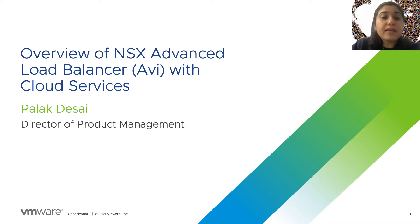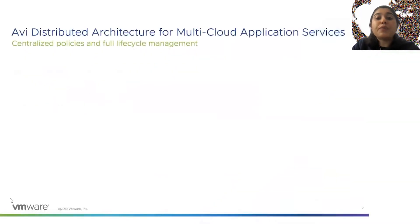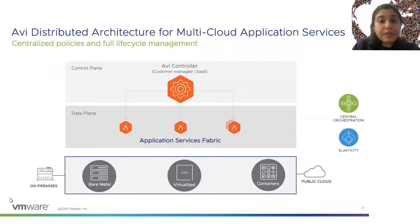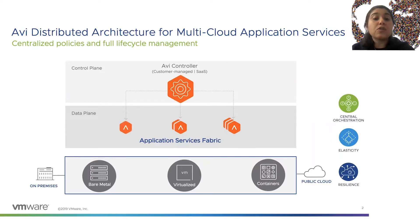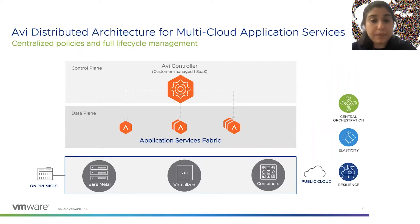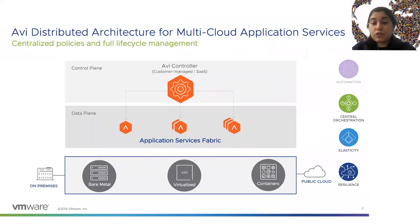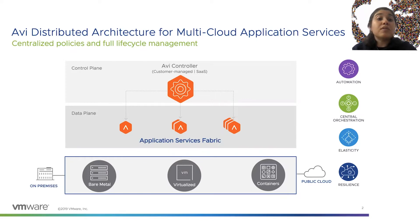Before we delve into the cloud services, I want to provide a quick overview of the AVI architecture. The AVI architecture is based on software-defined principles — it has a notion of a controller and a notion of the data plane. The controller provides intelligence and automation to the data plane, while the data plane provides load balancing capabilities. The solution is seamless: it works on bare metal, virtualized, and containerized environments, as well as a public cloud of your choice, including VMC.